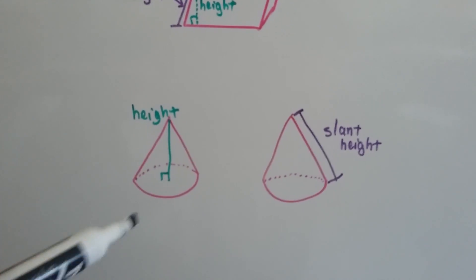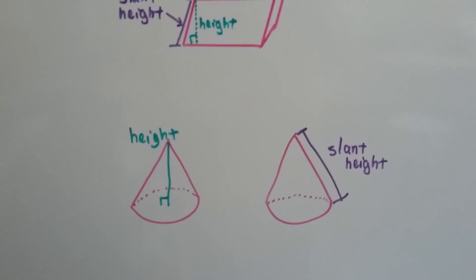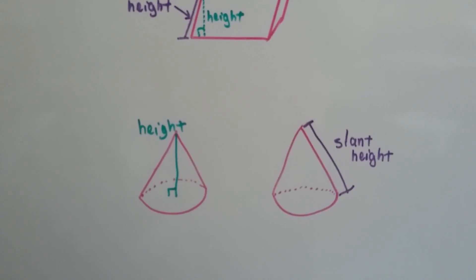In a cone, the height would go from the center of the base straight up to the vertex. But the slant height of the cone would be the outside surface line segment right here.